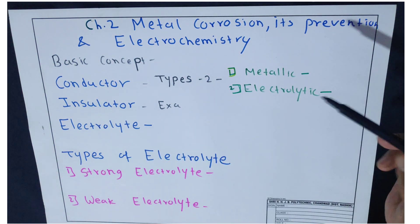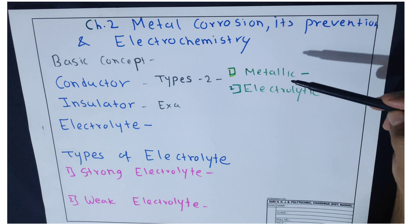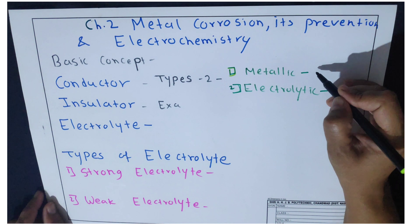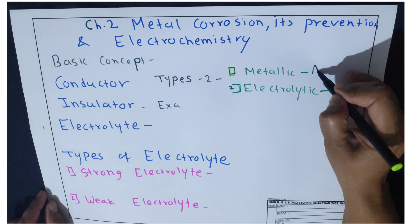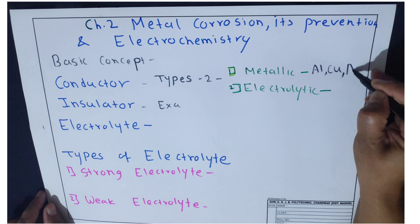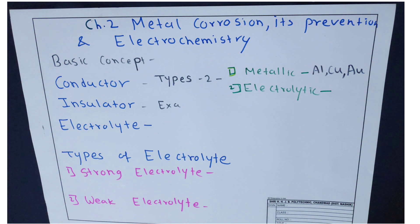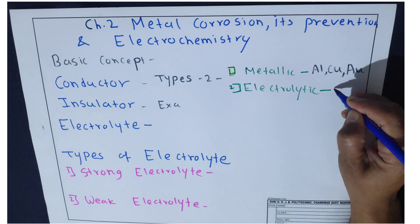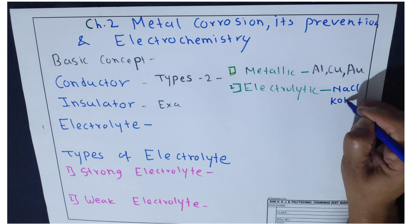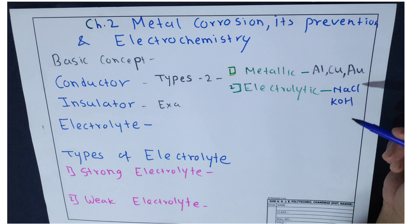There are two types of conductors: electrolytic conductor and metallic conductor. Metallic conductors include all metals like aluminium, copper, and gold. The second type is electrolytic conductor, which means the electrolyte acts as a conductor. For example, NaCl solution and KOH solution are electrolytic conductors.